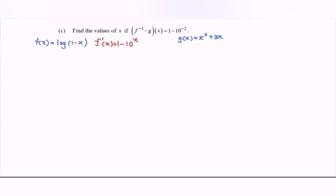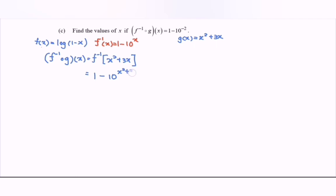For part c: find the value of x if f inverse composed with g equals 1 minus 10 to the power of negative 2. So f inverse of g(x) equals f inverse of (x squared plus 3x), which equals 1 minus 10 to the power of (x squared plus 3x). On the right-hand side we have 1 minus 10 to the power of negative 2.